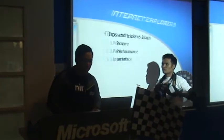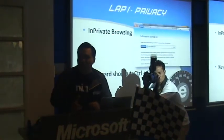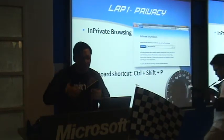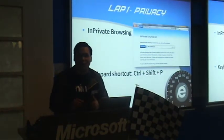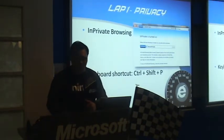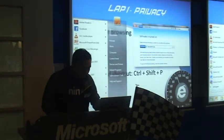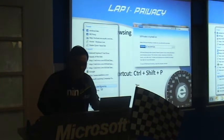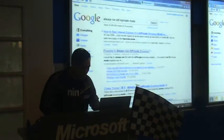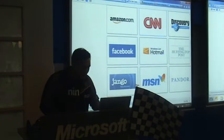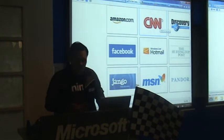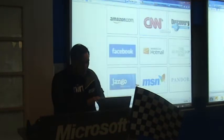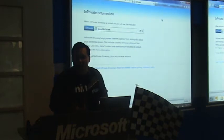So let's start with privacy. One of the things people wanted to know is how to open up the browser in private browsing mode. Basically all you need to do is right-click your IE and there is the icon for InPrivate browsing. Or if you already have an open browser, the shortcut is Ctrl+Shift+P, and it opens up a new window in private mode.